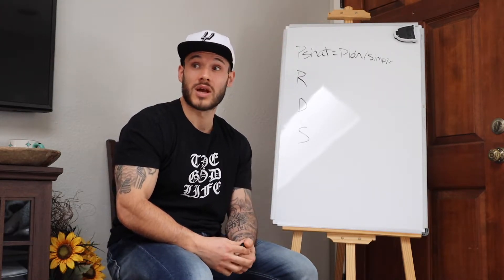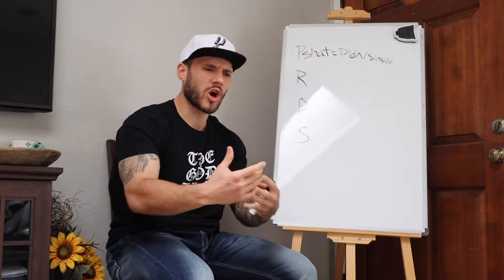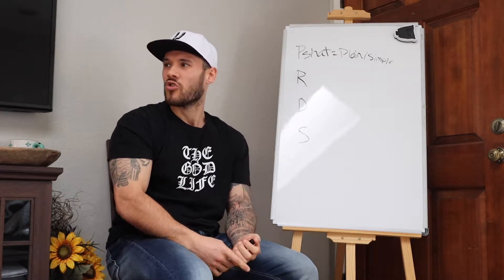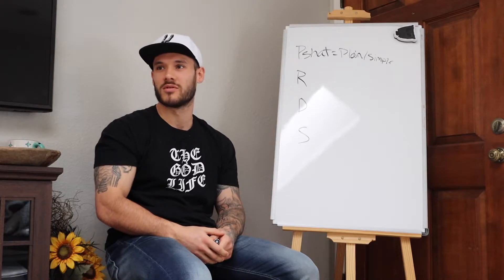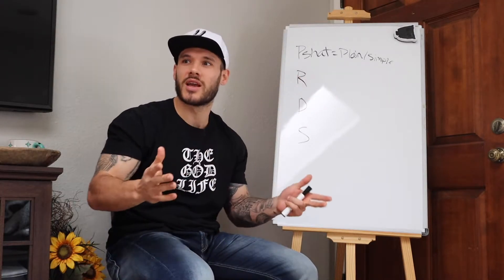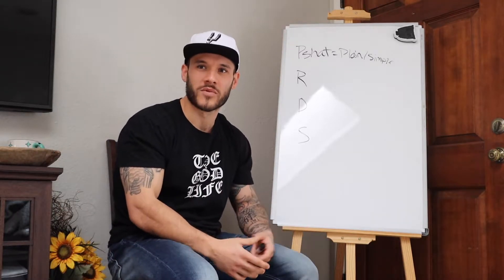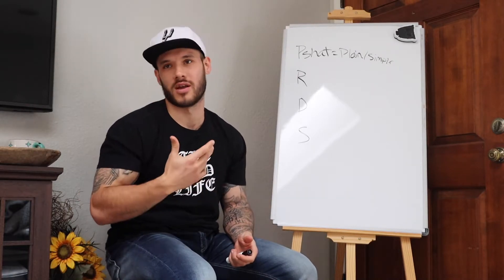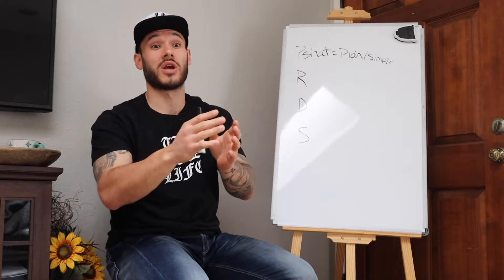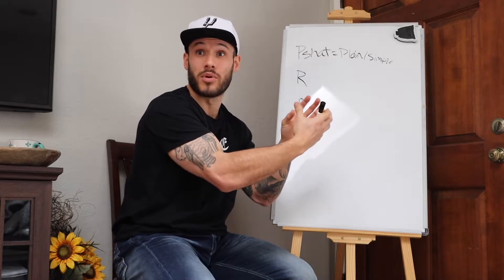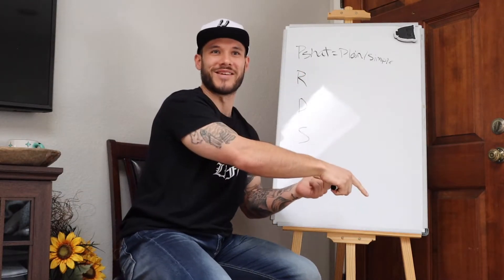Another example is 2 Timothy 3:8, where Paul speaks to Timothy and brings up two individuals named Jannes and Jambres, saying 'remember how Jannes and Jambres withstood Moses.' But nowhere in the entire Bible do we have any individuals named Jannes and Jambres. Paul is talking to Timothy like he knows this — because Timothy was familiar with the oral tradition, with stories that are not written down in the Bible. This helps us understand the direction Paul is giving Timothy.